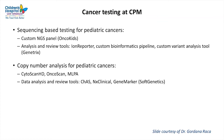For cancer testing at CPM, we have a DNA and RNA-based NGS panel called the OncoKids test to detect DNA variants, RNA fusions, and gene amplification. Tools include Ion Reporter, a custom bioinformatics pipeline, and a custom variant analysis tool. On the copy number side for cancer, we use CytoScan for frozen tissue and bone marrow samples and OncoScan for FFPE samples. We also run MLPA for single gene exonic deletions and duplications on tumor tissue, including TP53, SMARCB1, and RB1.